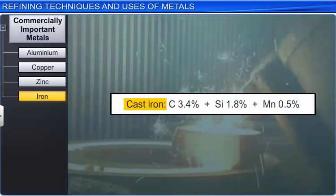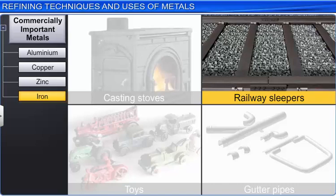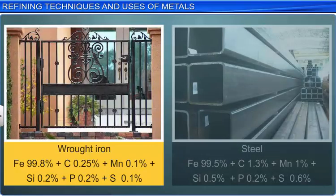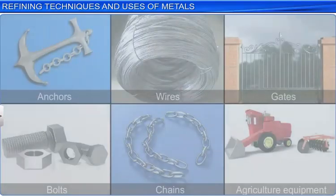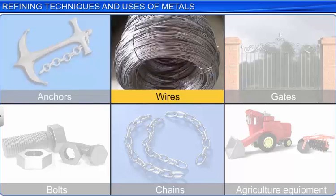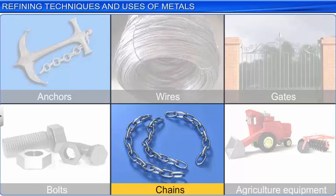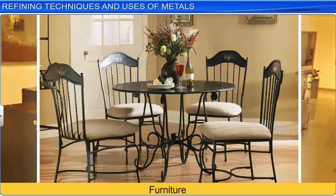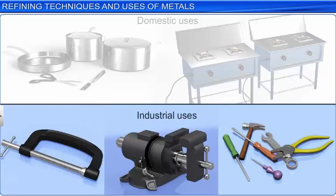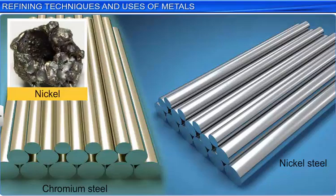Cast iron, the most important form of iron, is used for casting stubs, railway sleepers, toys and gutter pipes. It is also used in the manufacture of wrought iron and steel. Wrought iron is used to make anchors, wires, gates, bolts, chains, agricultural equipment and furniture. An important alloy of iron is steel, which has many domestic and industrial uses. Different varieties of steel can be obtained by adding other metals like nickel, chromium, cobalt and manganese to it.